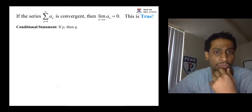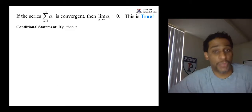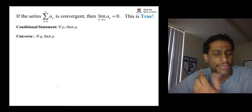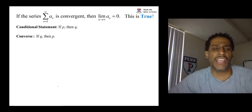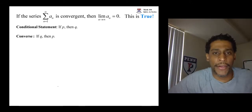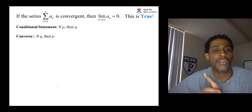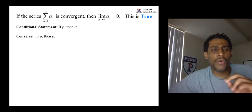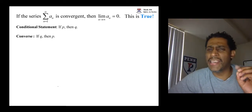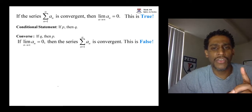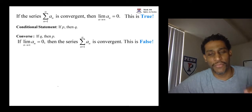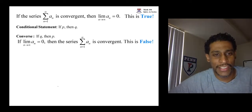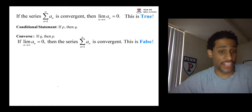The first alteration is switching the P and Q — reading it backwards, basically: if Q then P. The name of that is called the converse of the original conditional statement. So taking our statement and switching P and Q gives us: if your limit is zero, then the series is convergent. That right there is a false statement.